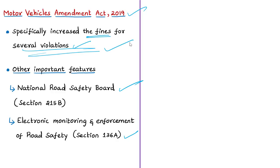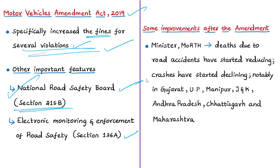Many provisions of the amendment beyond increasing fines have not been given effect at the national or state levels. For example, the National Road Safety Board is yet to be constituted as per new Section 215B of the act. Even some states did not adopt the amendment in total, as the amendment gives states considerable space to make their own rules. The Minister of Road Transport and Highways noted that due to increased fines, deaths from road accidents have started reducing, and crashes have declined notably in states like Gujarat and Uttar Pradesh.